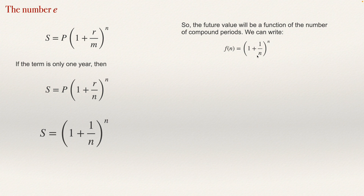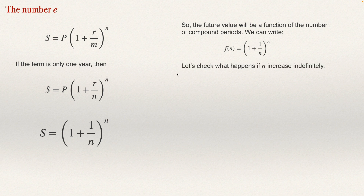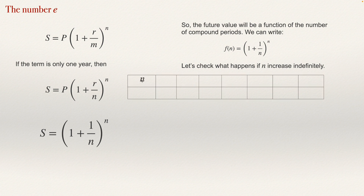What I'm going to see is what happens when n increases. So we have n and f(n). What happens if n equals 1? If n equals 1, we have f(1) = (1 + 1/1)^1. So this is 1 plus 1, which is 2 to the power 1, giving us 2.